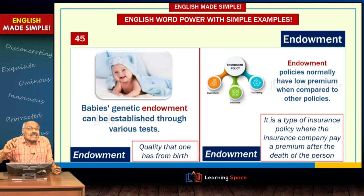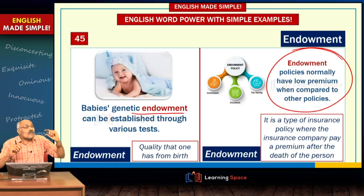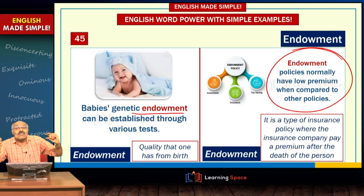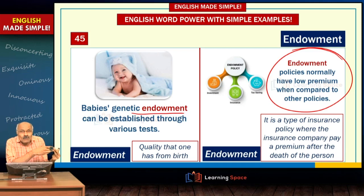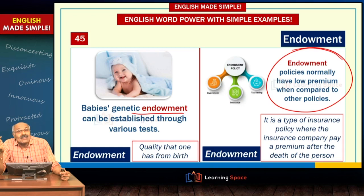Another meaning of endowment is qualities inherited from parents at birth — for example, a baby's genetic endowment can be established by conducting various tests. A third meaning refers to insurance policies with lower premiums — simple policies over 30 or 40 years where a risk payout is available but with no money-back features. Additionally, in state governments there is an Endowment Department that monitors and regulates religious institutions.